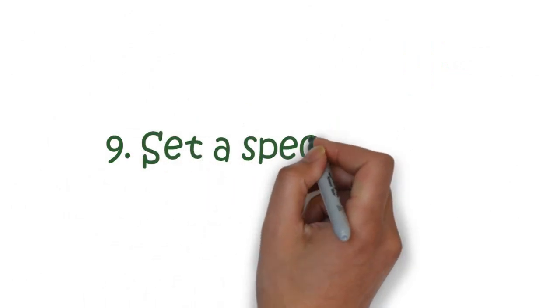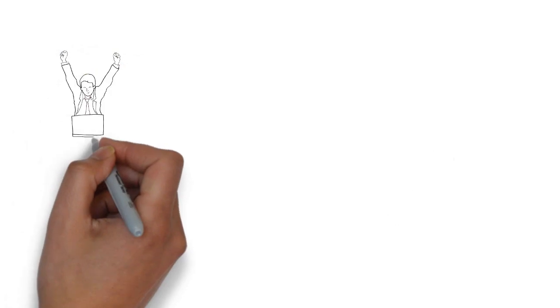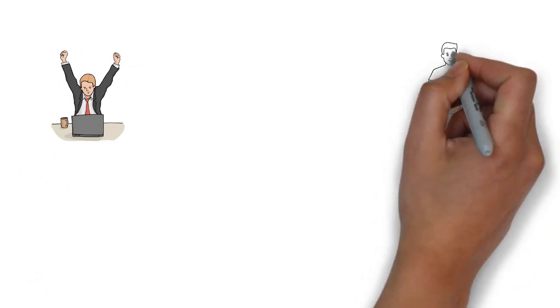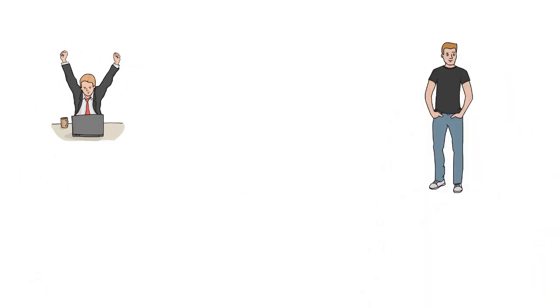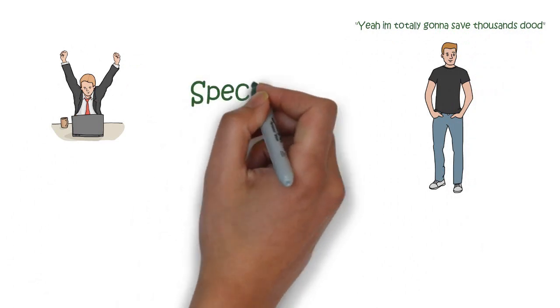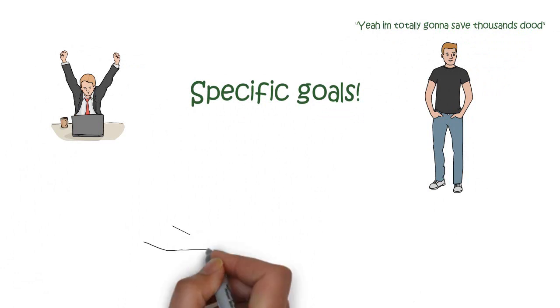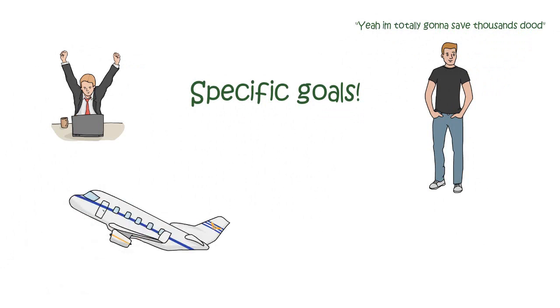Number 9. Set a specific goal. While some of us are more goal-driven individuals than others, it definitely helps to motivate you to save more if you have a specific goal to aim for. If you just decide that, oh yeah, I'm totally gonna save thousands this year, you probably won't do that. But when you set a specific goal like, I'm gonna save 10,000 this year or I will save 10,000 to travel around the world, it makes it more motivating.